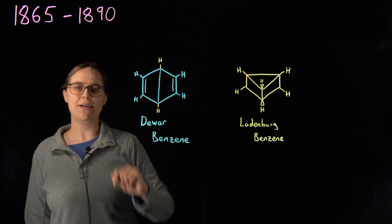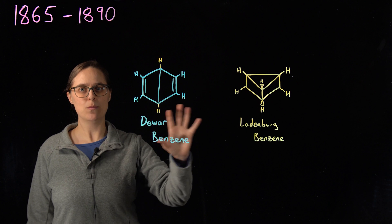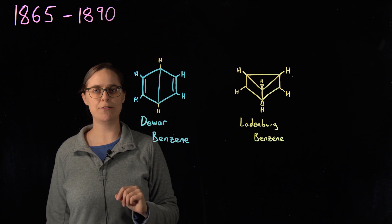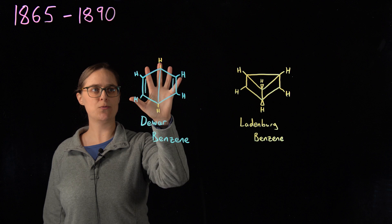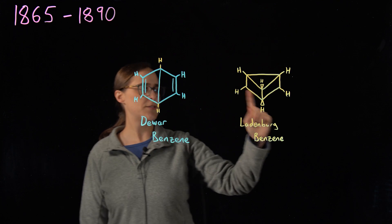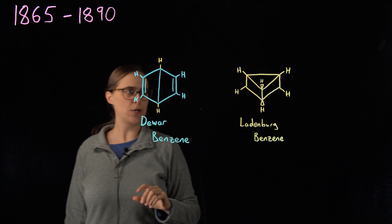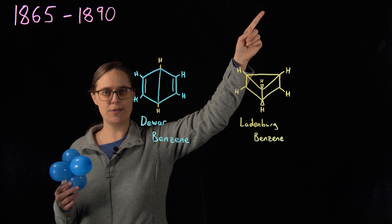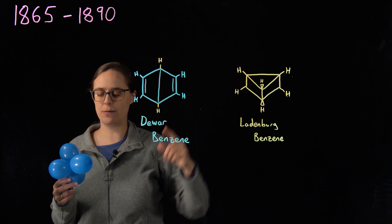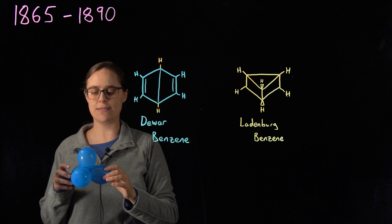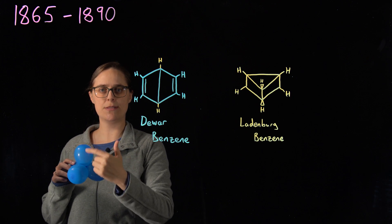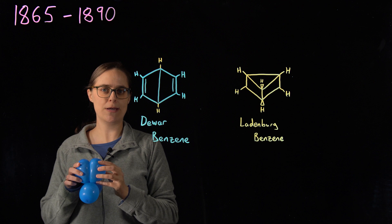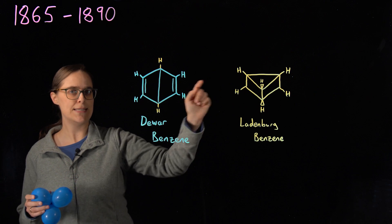Between 1865 and 1890, the debate about benzene structure was ongoing and more structures were proposed. Dewar proposed a structure whose main problem is that the six hydrogens are not equivalent — replacing one hydrogen with a halogen would give two different products. Leidenberg proposed another structure, but we don't know what gives benzene its unusual stability, and this doesn't look like it.